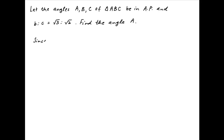Since angles A, B and C in the triangle ABC are in arithmetic progression, therefore A plus C is equal to 2B.